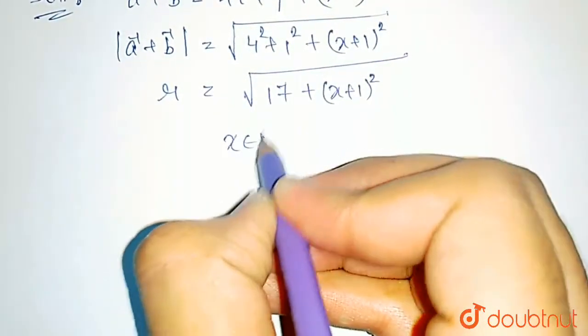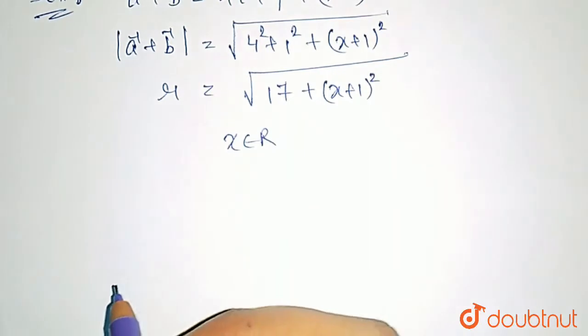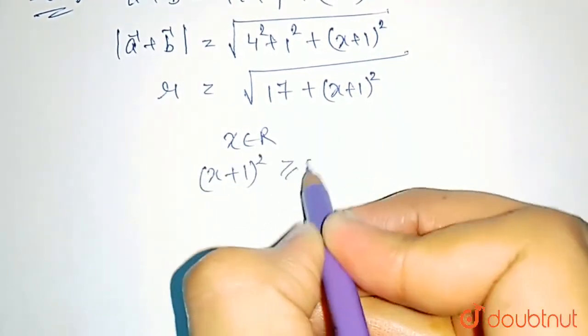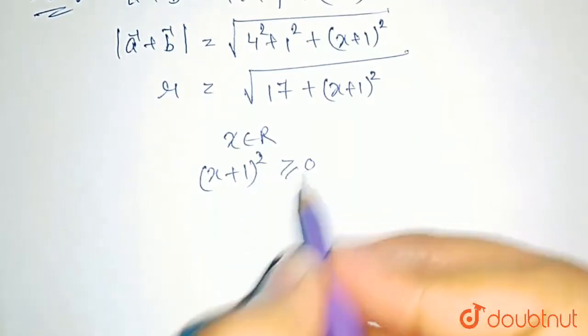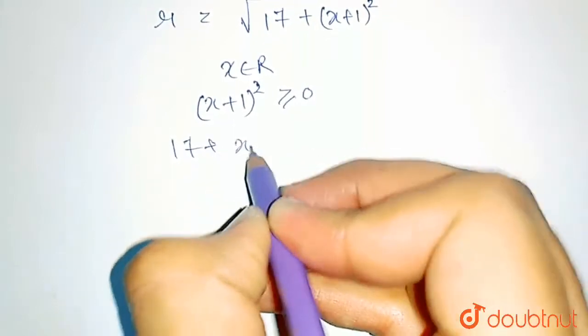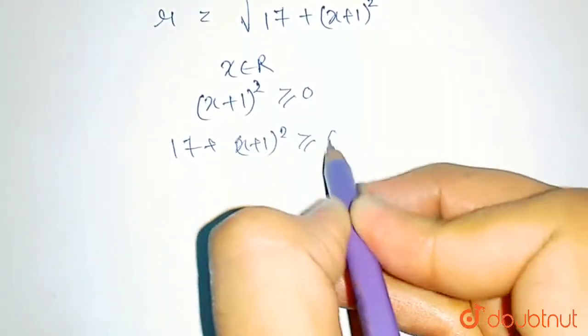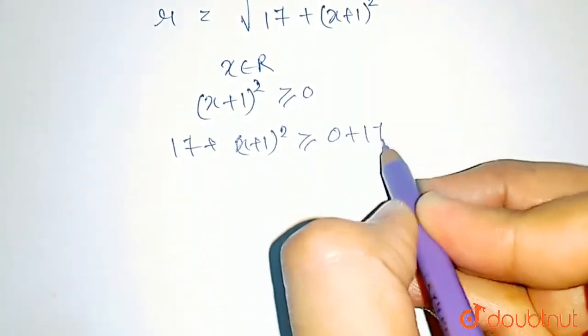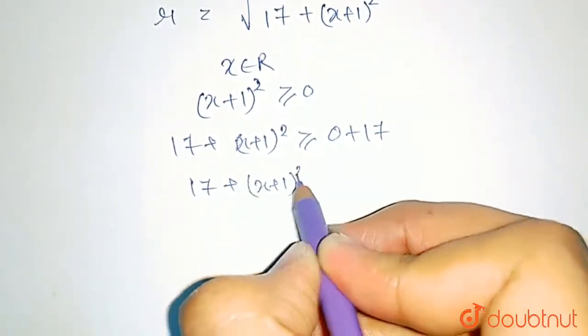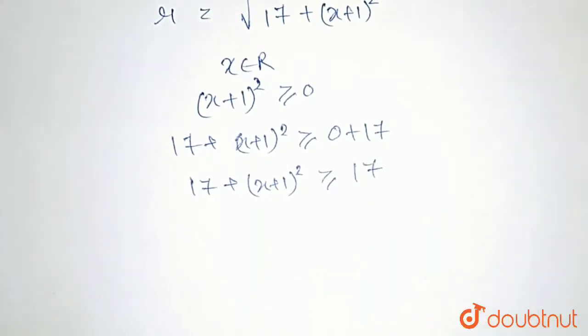Now, it is given that x is some real number. Therefore, (x plus 1) whole squared will always be positive because the square of any number is always positive. If we add 17 to both sides, we get that 17 plus (x plus 1) whole squared is always greater than or equal to 17.